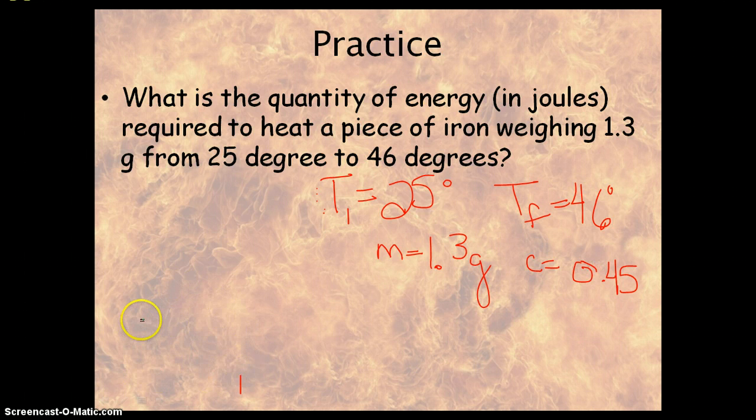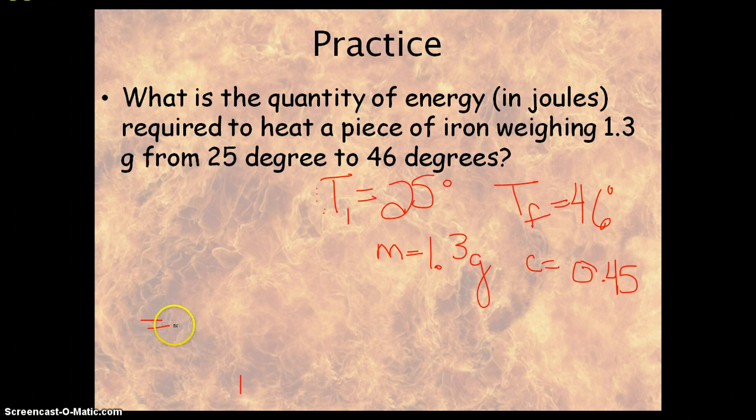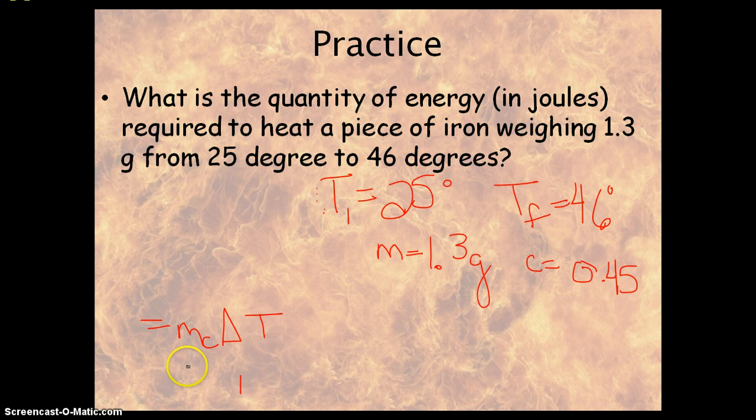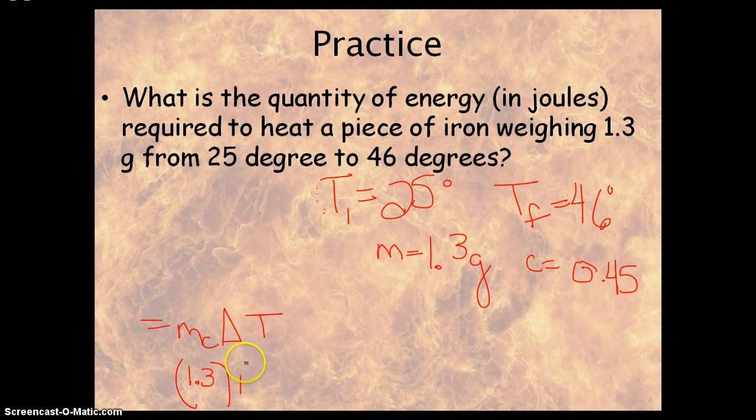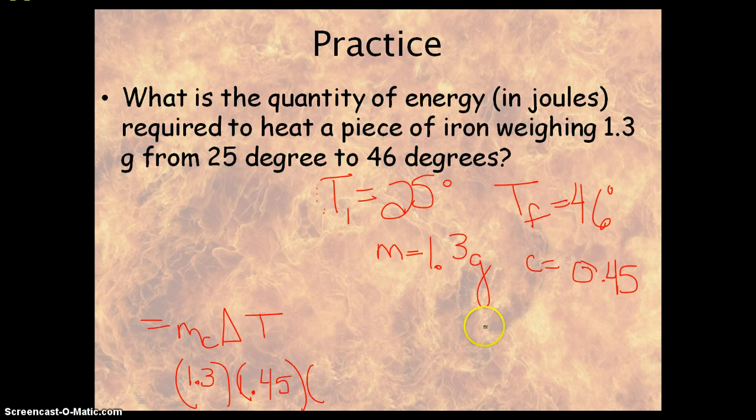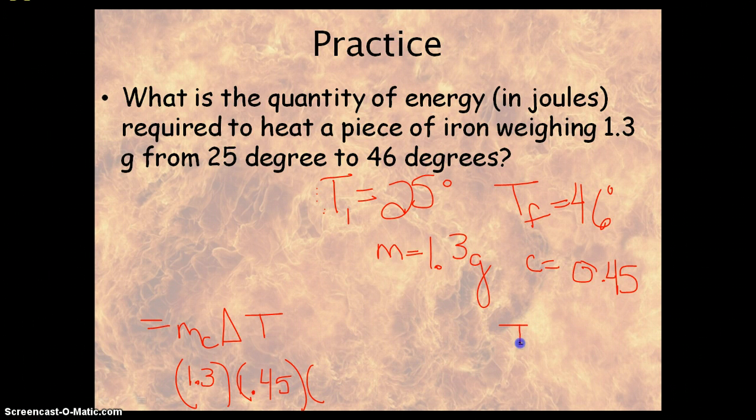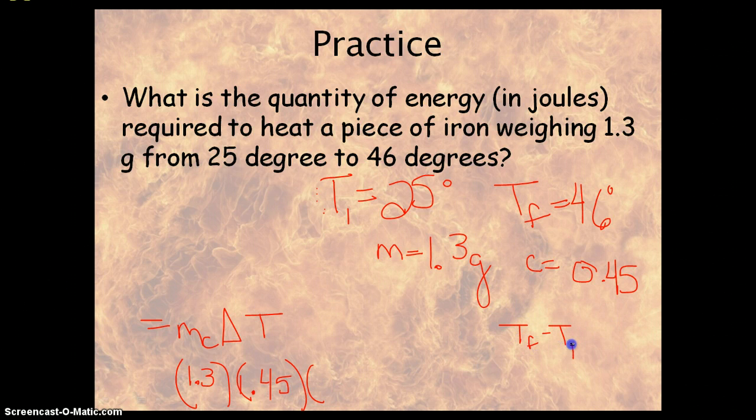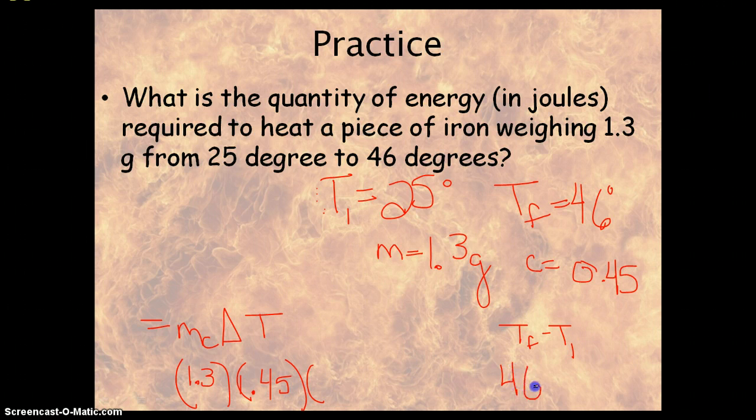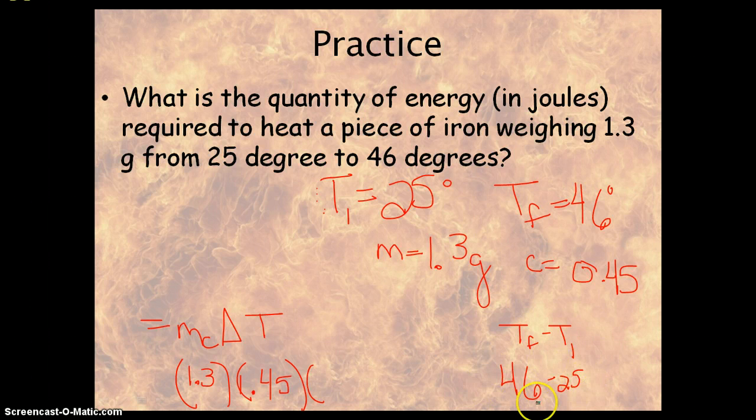Now we're going to plug in our equation, Q equals mc delta T. Mass is 1.3, C is 0.45, and then we have our delta T, which is T final minus T initial. So 46 minus 25 gives us a value of 21 for our delta T.